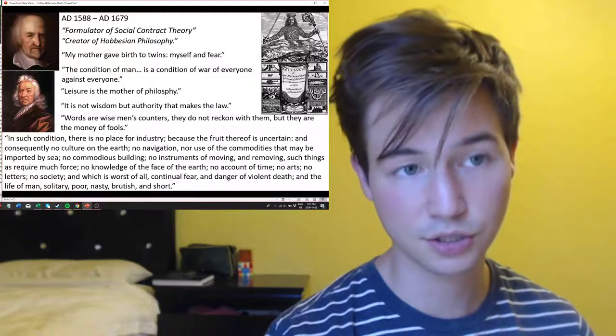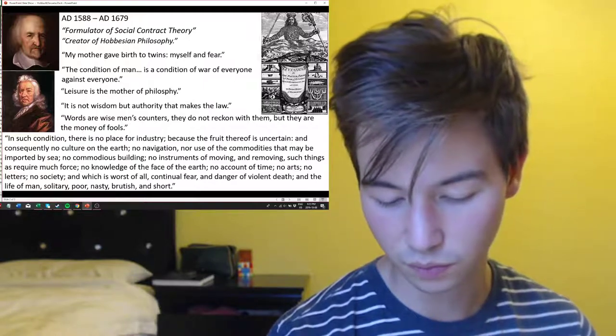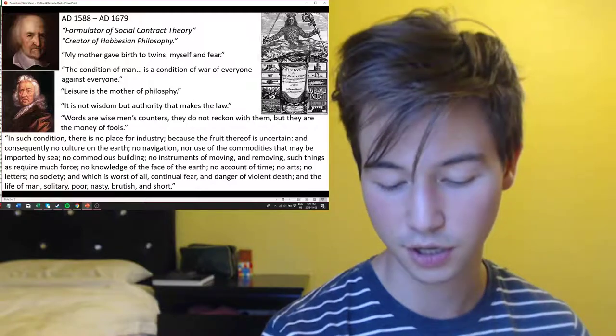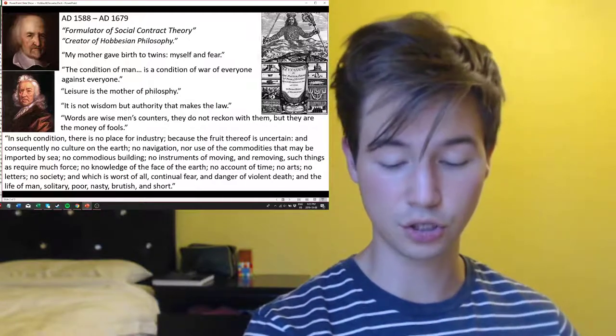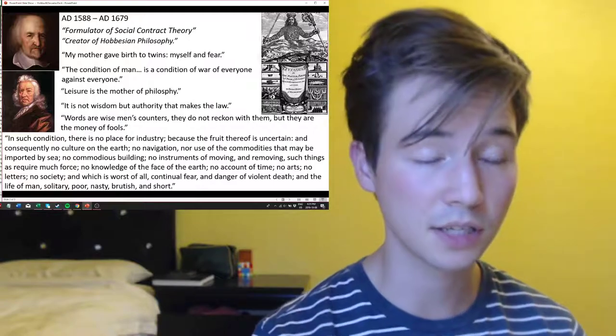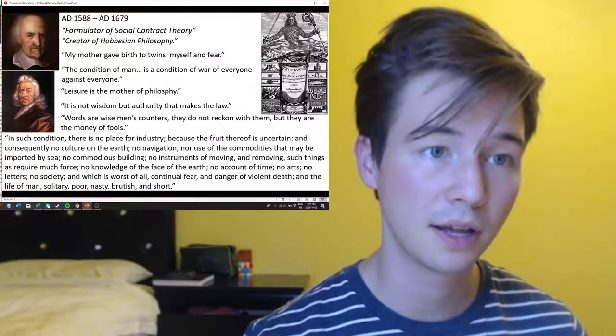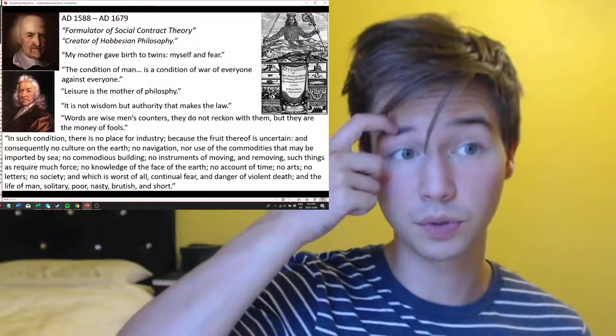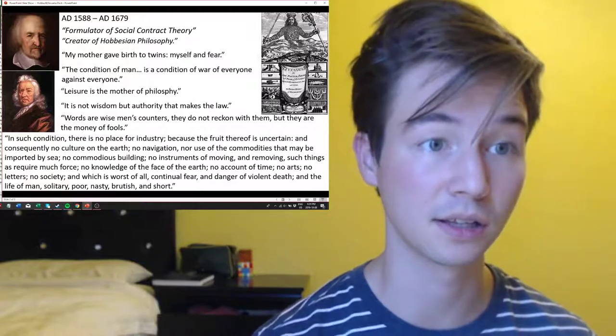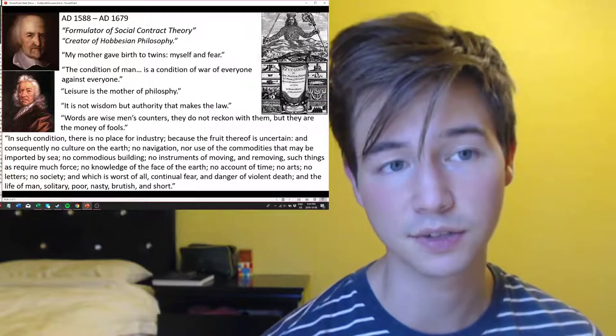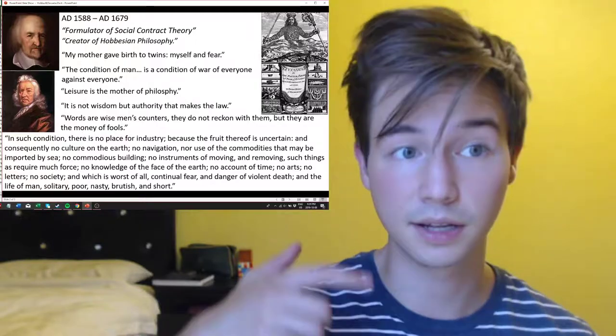He started school at Westport Church at the age of four, then went to Malmesbury School where the head was an Oxford alumni. Following suit, he went to Magdalen Hall, which is now part of Hertford College in Oxford. He was a pretty stellar student, so we could attribute a bit more of Hobbes' success to his own personal merit rather than family connections.